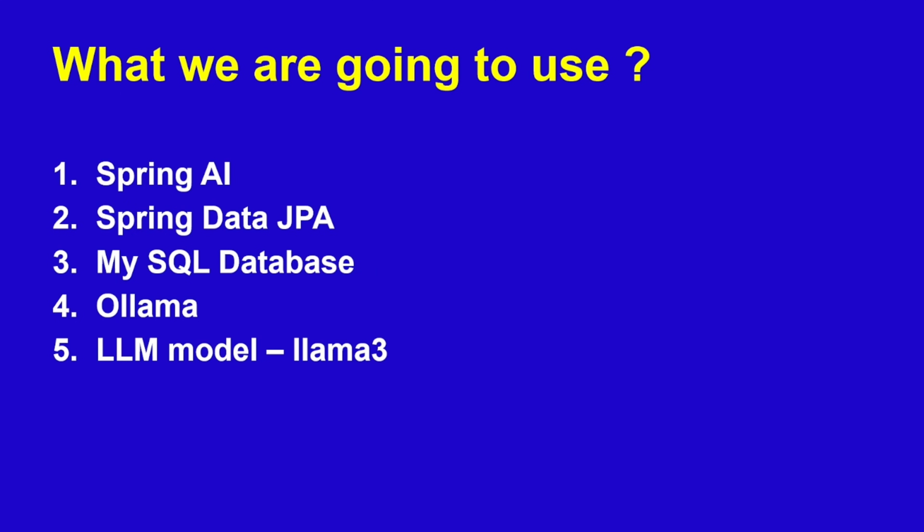The fourth component is Ollama, which we are using to run models on your local system instead of in the cloud. We are not using any external paid models — we use local models running on your local machine. The fifth is the Llama3 LLM model. These are the five things we are going to configure.